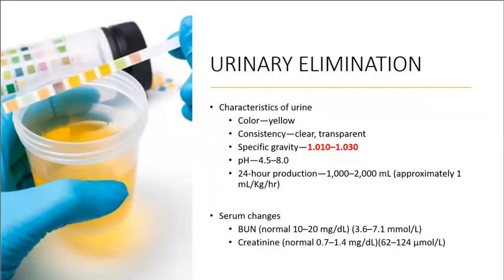Assessing urine characteristics: it should be yellow, clear, and transparent. Specific gravity should be between 1.010 and 1.030. Anything above 1.030 tells you the client is dehydrated — remember: high and dry. High specific gravity means the client is dry, i.e., dehydrated.